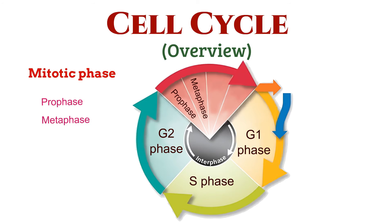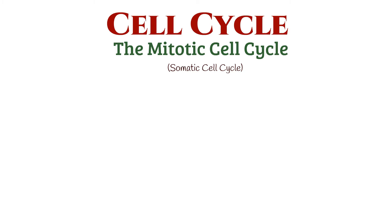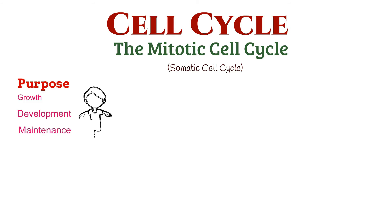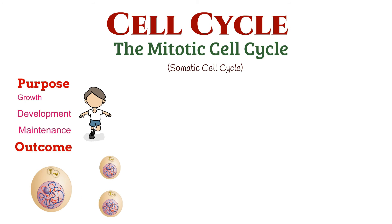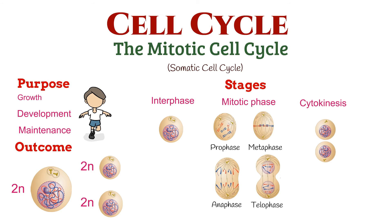The mitotic or M phase is further divided into four stages. The mitotic cell cycle, also known as the somatic cell cycle, is responsible for the growth, development, and maintenance of somatic or body cells in multicellular organisms. The end result is the production of two identical daughter cells, each with the same number of chromosomes as the parent cell. The mitotic cell cycle comprises interphase and the mitotic phase, which includes prophase, metaphase, anaphase, and telophase, followed by cytokinesis.